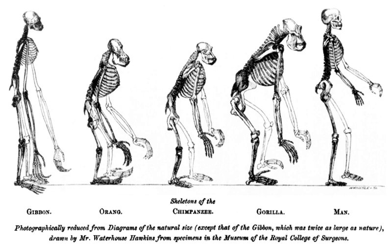Around 1.7 Ga, multicellular organisms began to appear, with differentiated cells performing specialized functions. Sexual reproduction, which involves the fusion of male and female reproductive cells to create a zygote in a process called fertilization, is in contrast to asexual reproduction the primary method of reproduction for the vast majority of macroscopic organisms, including almost all eukaryotes. However, the origin and evolution of sexual reproduction remain a puzzle for biologists, though it did evolve from a common ancestor that was a single-celled eukaryotic species.